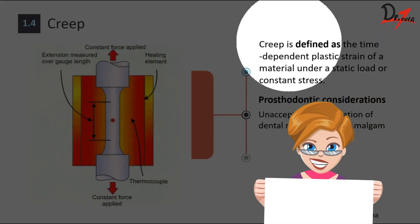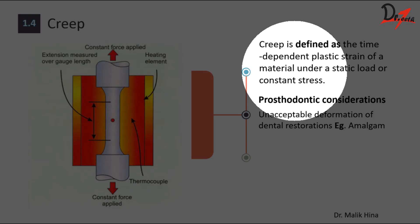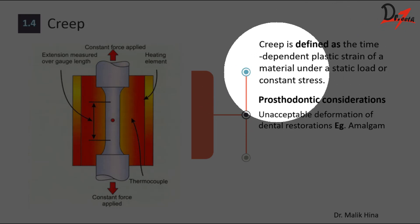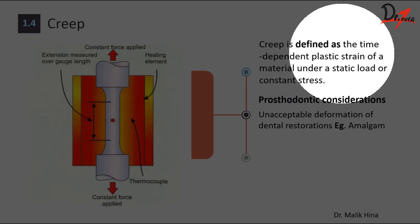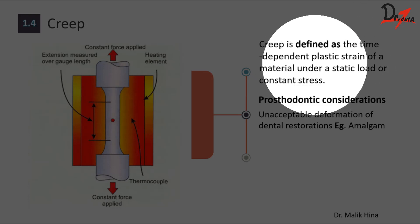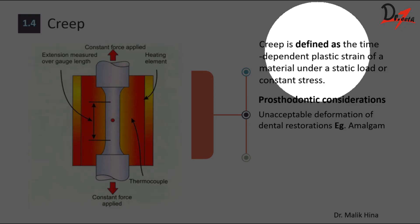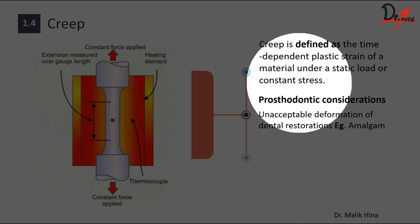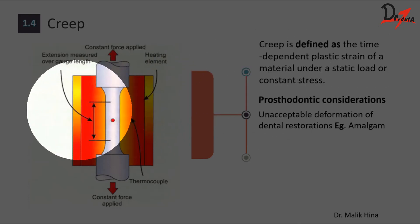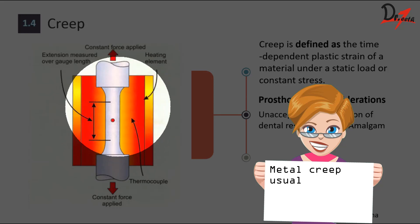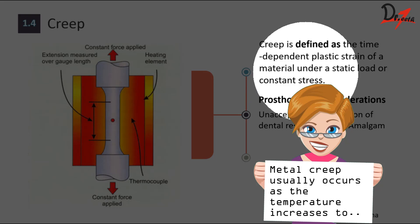Creep is defined as the time dependent plastic strain of a material under a static load or constant stress. Here keep in mind these things. First of all, it is a time dependent plastic strain. Strain means deformation, and plastic means that it cannot be reverted back to its original size, original form. Elastic means it will revert back and plastic means it will not revert back. So it is a time dependent plastic strain of a material under a static load, and the load here is static and constant. Also keep in mind that the temperature of the environment here should be near the melting range of the metal. So two things are important here: the temperature and the static load or constant stress.